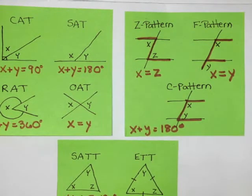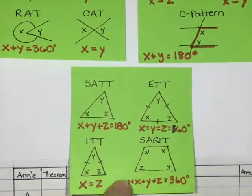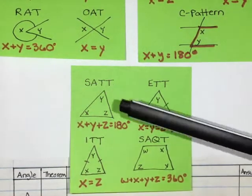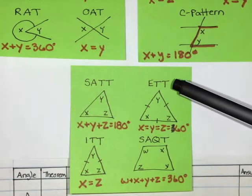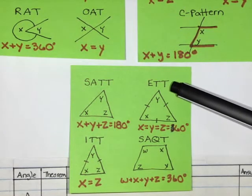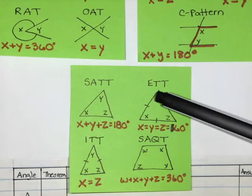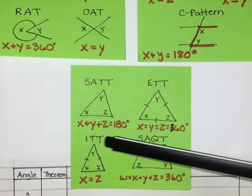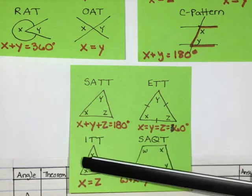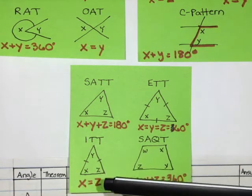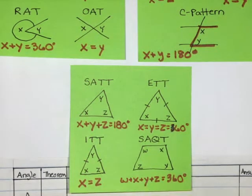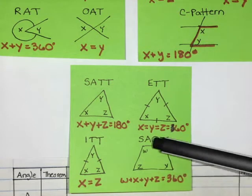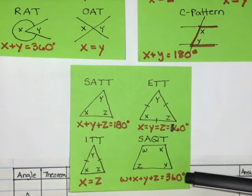Then we did our shapes — triangles and quadrilaterals. The three angles in a triangle add to 180 degrees; that is the sum of the angles in a triangle theorem, otherwise known as SATT. ETT is the equilateral triangle theorem — all sides are the same, all angles are the same, and they all equal 60 degrees. ITT is the isosceles triangle theorem — isosceles triangles have two equal sides and two equal angles, always where those equal sides meet the third side. And SAQT, the sum of angles in a quadrilateral theorem, says the four angles add to 360 degrees.